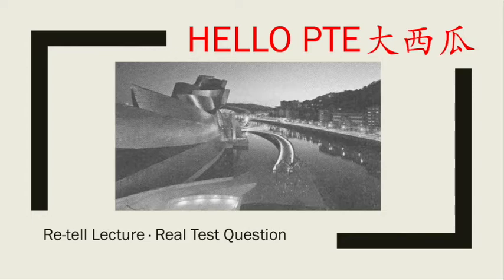Soon enough, Gehry wanted to break away from straight lines and grid-like designs. He wanted the freedom to experiment with other shapes, curves, and unusually angled roofs.